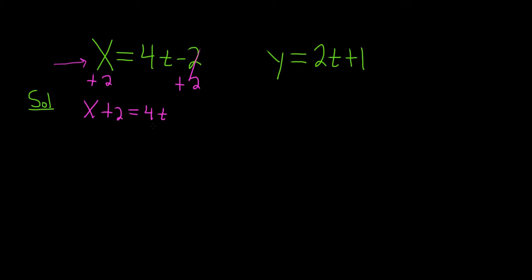And to solve for t, we'll just divide everything by 4. So we'll divide by 4, and then over here, I'll just divide each individual piece by 4. So we get t = X/4 + 1/2.